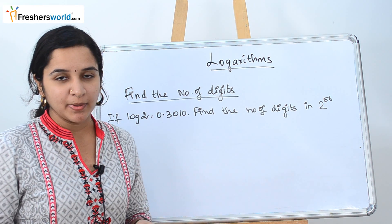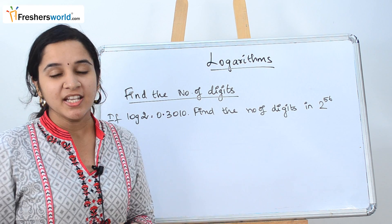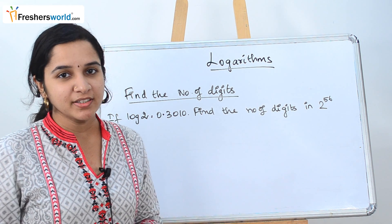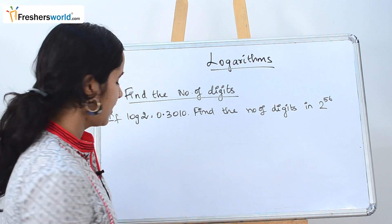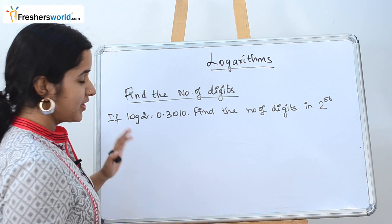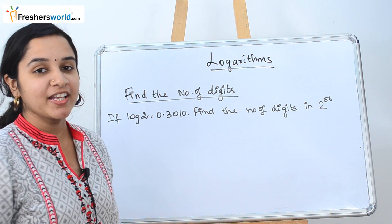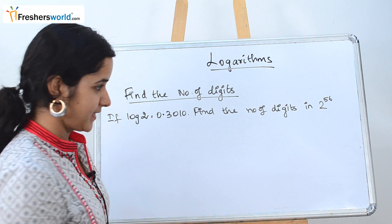The next type of problem that we are going to look at in logarithms is find the number of digits. This is a very common problem you can face in the aptitude exam. Let's see how we can solve it. They have given the question as: if log 2 is equal to 0.3010, find the number of digits in 2 to the power 56.